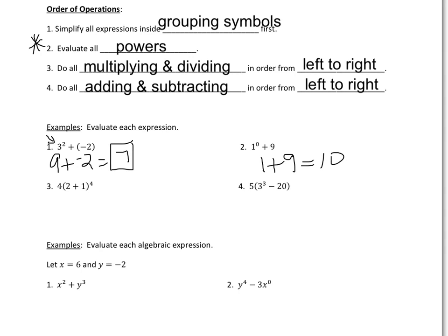In number three, we have to do the problem inside the parentheses first. So we have 4 times, and inside the parentheses 2 plus 1 is 3, giving us 3 to the fourth power. Our next step is to evaluate 3 to the fourth power: 3 times 3 is 9, times 3 is 27, times another 3 is 81. Then we finish by doing 4 times 81, which equals 324.